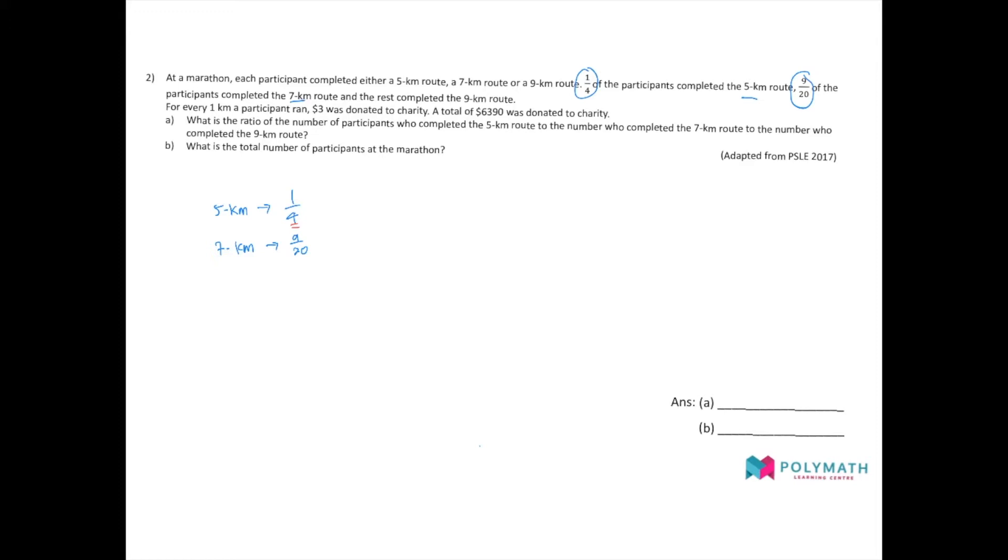For the 5km proportion, one quarter, the denominator 4 represents the total. So does the denominator of the 7km route. They are referring to the same total. We can change them to the lowest common multiple of 4 and 20. The lowest common multiple of 4 and 20 is 20.